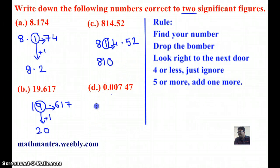And the last example, 0.00747. Here, the third significant figure is 7, and there is no number next to 7, which means there is 0.